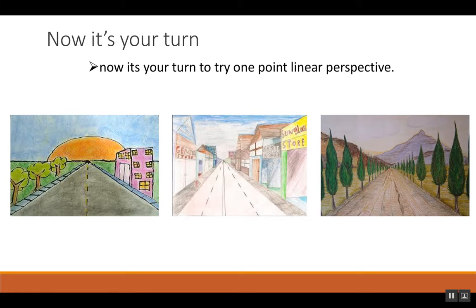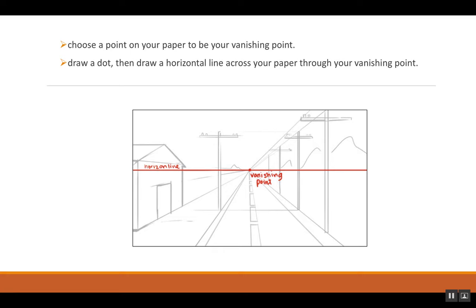Now it's your turn — we're going to try to do a one-point linear perspective drawing. If you've got your paper in front of you, it should be blank. You should have your ruler and pencil with you. On your blank piece of paper, you're going to choose a vanishing point — that one little dot somewhere just above the middle of the paper. Then take your ruler and draw a horizontal line across your paper through that vanishing point.